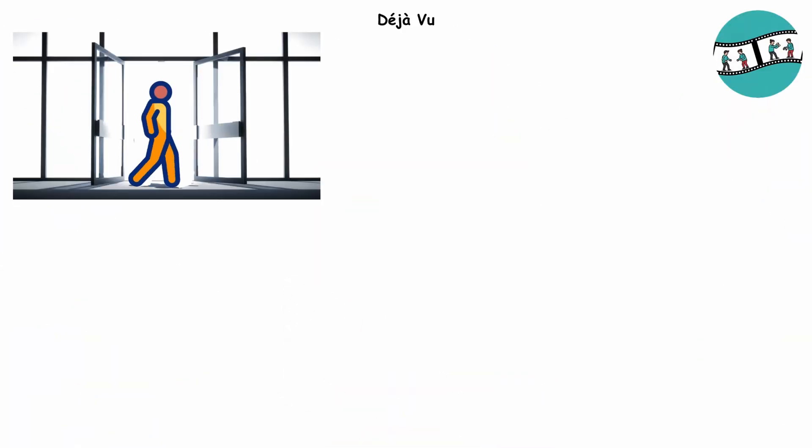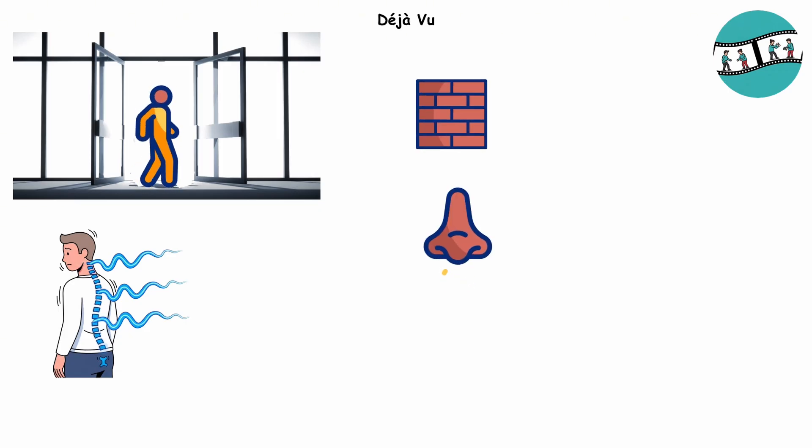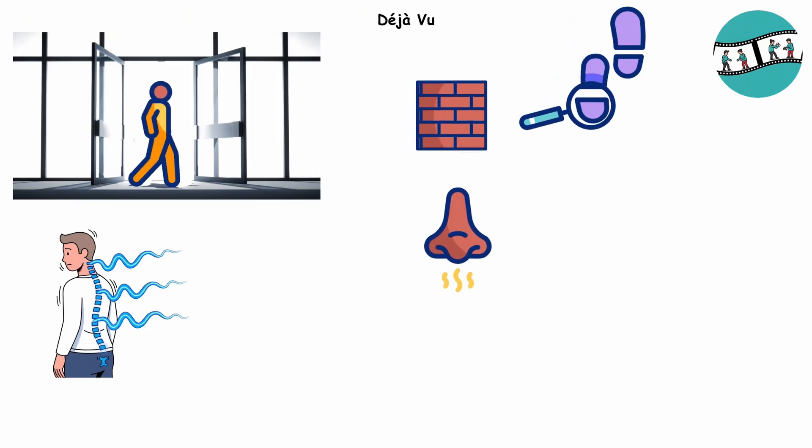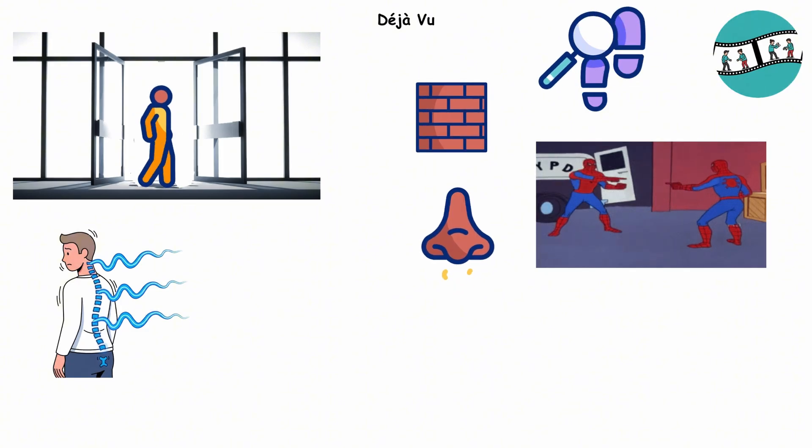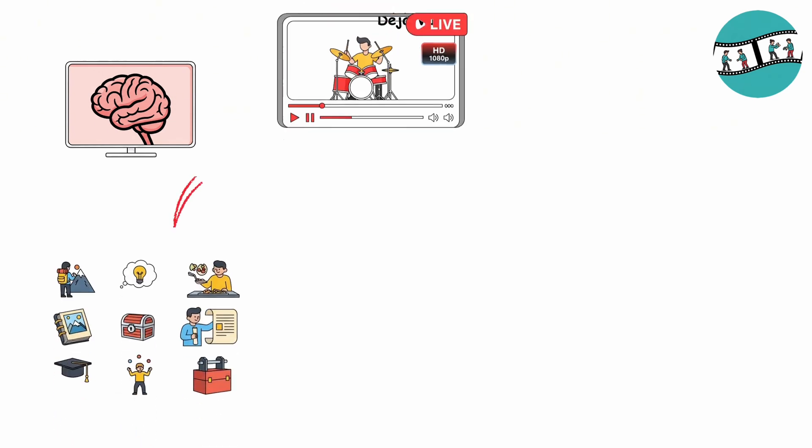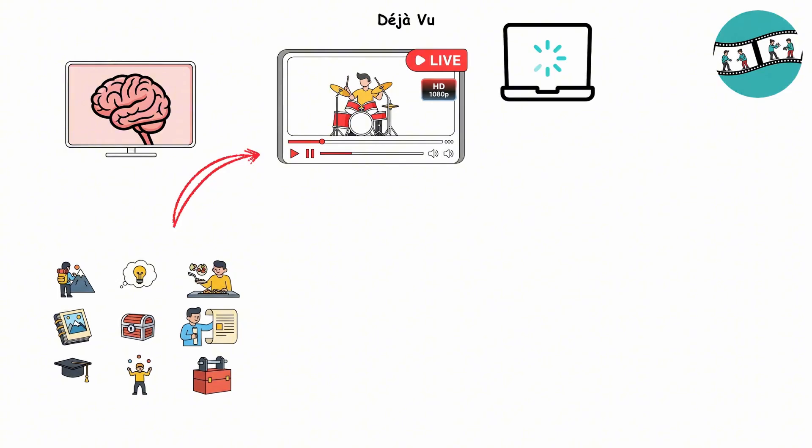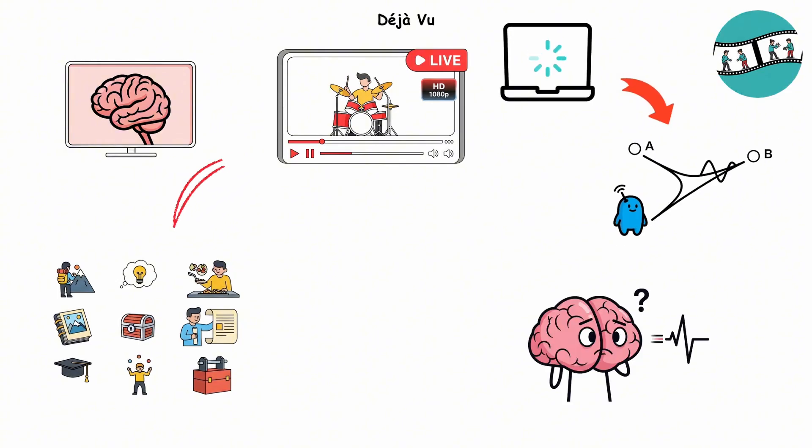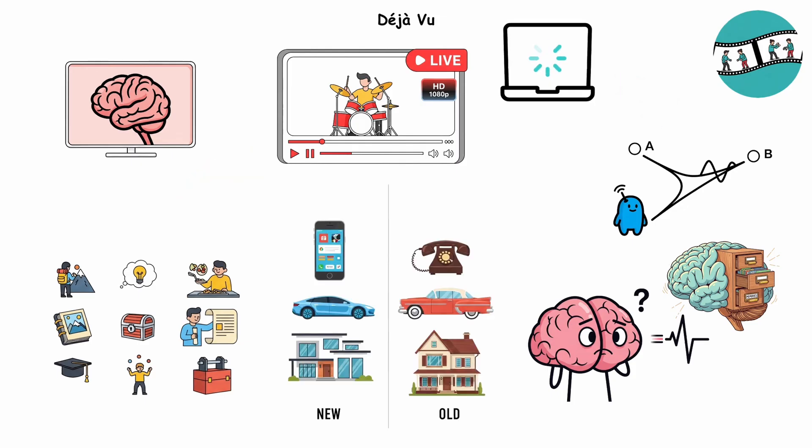Déjà vu. You're walking through a brand new building when suddenly a chill runs down your spine. The walls, the smell, the footsteps. It all feels weirdly familiar. That's déjà vu. It's your brain tripping over its own wiring. Picture your brain as a streaming service. Normally, new experiences play instantly in HD. But if the signal lags by even a split second, the replay arrives just late enough that your brain mistakes it for something from the archives. Fresh scene, but it feels like a rerun.